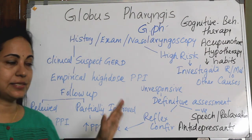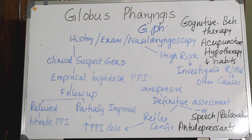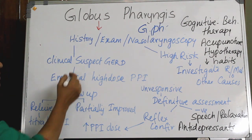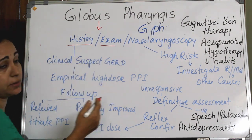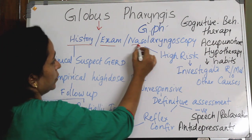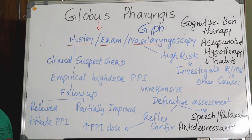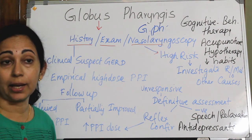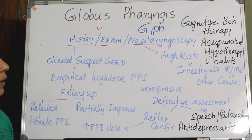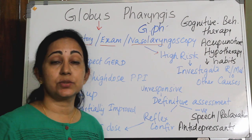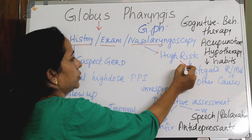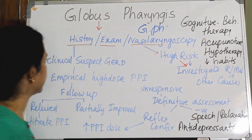Regarding the management algorithm: when a Globus patient presents, take a detailed history, perform careful examination, and do a flexible nasolaryngoscopy under local anesthesia. If the patient is high risk — presenting with any of the alarm symptoms mentioned — perform investigations to rule out malignancy or other causes.